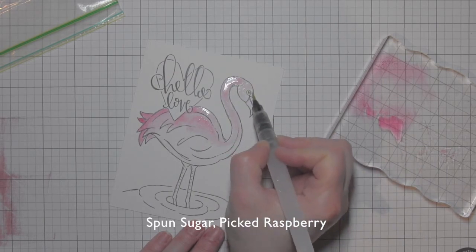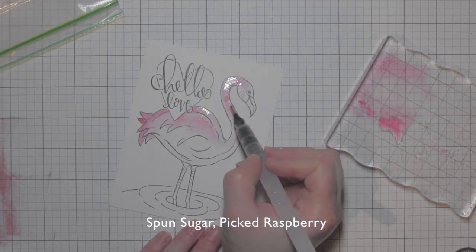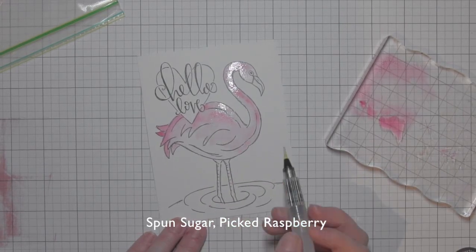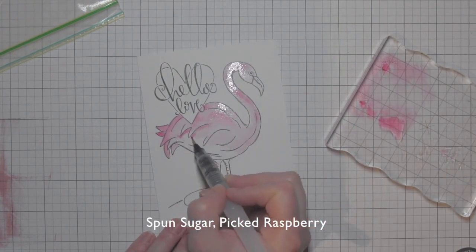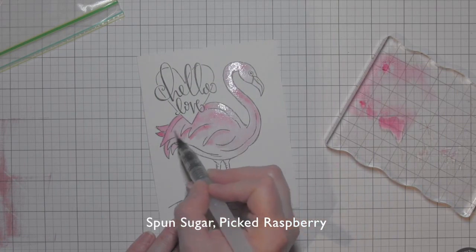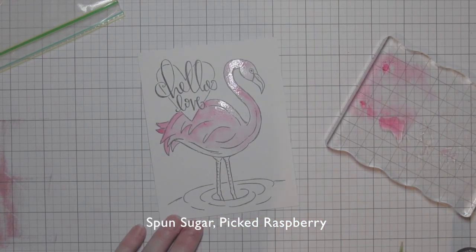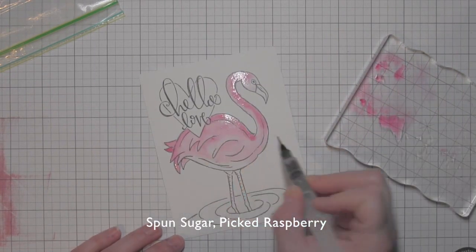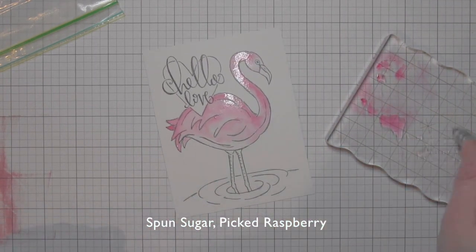I colored this in with these two colors, let it completely dry. I even let it set for a day and came back to it, and it was just a little too pink. So I'm going to end up adding a little abandoned coral to give it that peachy color, and I like it a lot better.